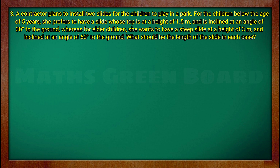What should we do in this question? For children below 5 years, the height of the slide will be 1.5 meters at a 30 degree angle. For elder children, the height will be 3 meters at a 60 degree angle. In both cases, we will find the length of the slide. We will solve the question one by one.